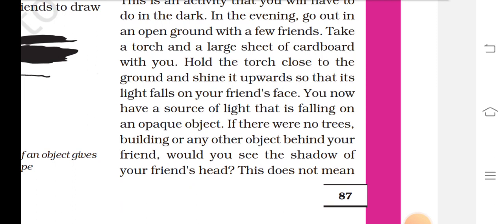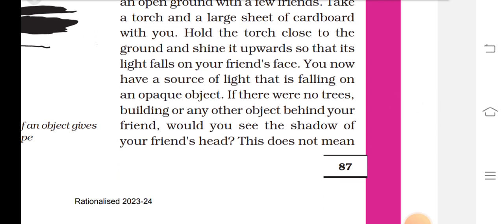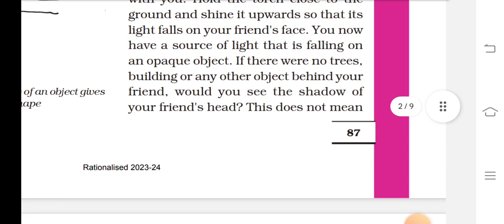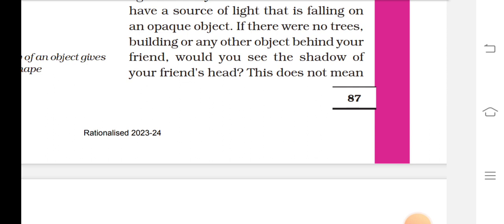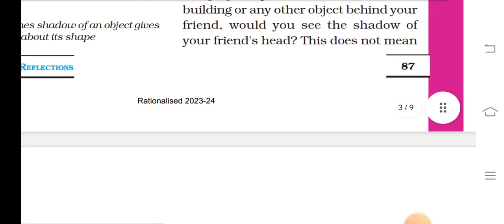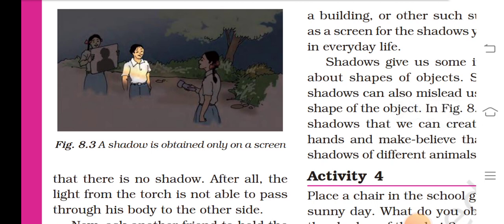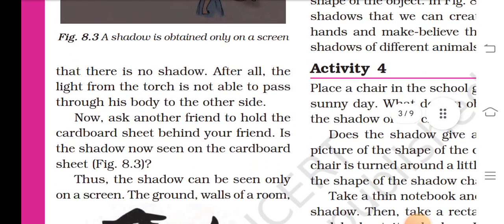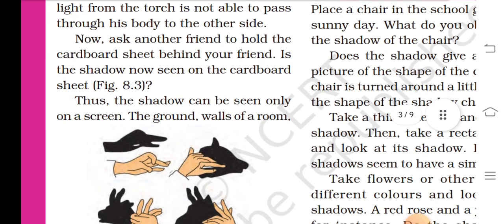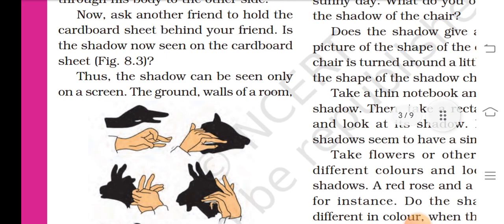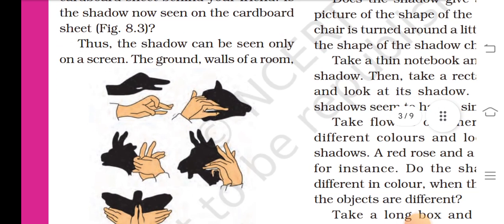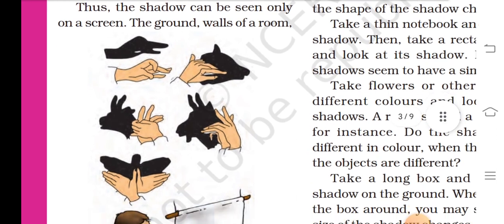This is an activity that you will have to do in the dark. In the evening, go out in an open ground with a few friends. Take a torch and a large sheet of cardboard with you. Hold the torch close to the ground and shine it upward so that its light falls on your friend's face. You now have a source of light that is falling on an object. If there were no trees, buildings, or any other object behind your friends, would you see the shadow of your friend's head? This does not mean a shadow is obtained only on a screen, that there is no shadow. After all, the light from the torch is not able to pass through his body to the other side. Now ask another friend to hold the cardboard sheet behind your friend. Is the shadow now seen on the cardboard sheet? Thus, the shadow can be seen only on a screen. The ground, walls of the room, a building, or other such surfaces act as a screen for the shadows you observe in everyday life.